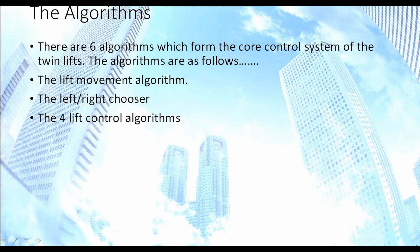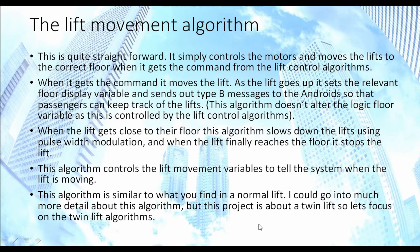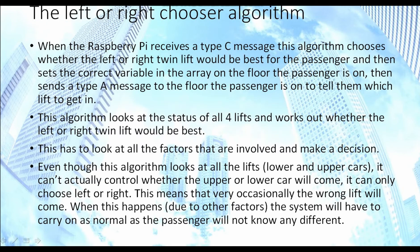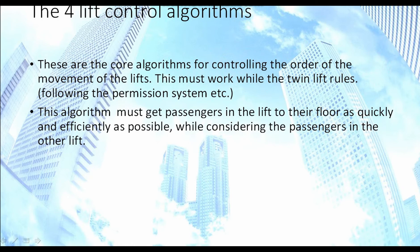There are six algorithms to control the twin lift: the lift movement algorithm, the left/right chooser, and four lift control algorithms. The lift movement algorithm is straightforward — it controls the lift like a standard lift: get to the floor, open doors, close doors (my scale model doesn't actually have doors but that's the concept), then move. The left or right chooser is triggered when the Raspberry Pi receives a C message; it has to choose whether the passenger is sent to the left or right lift through complicated calculations — I'll cover that in another video.